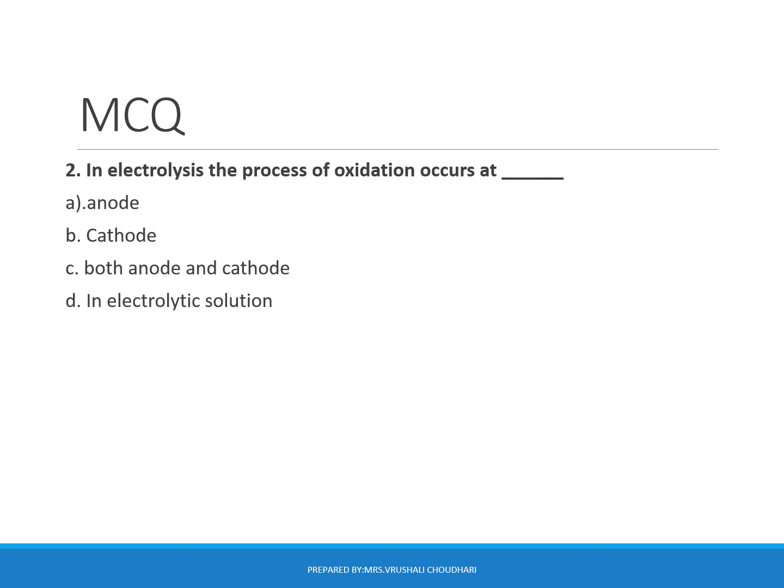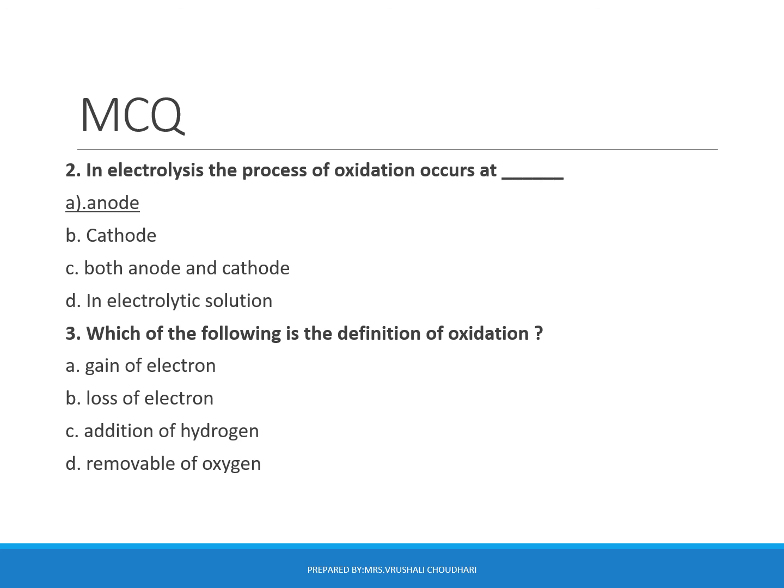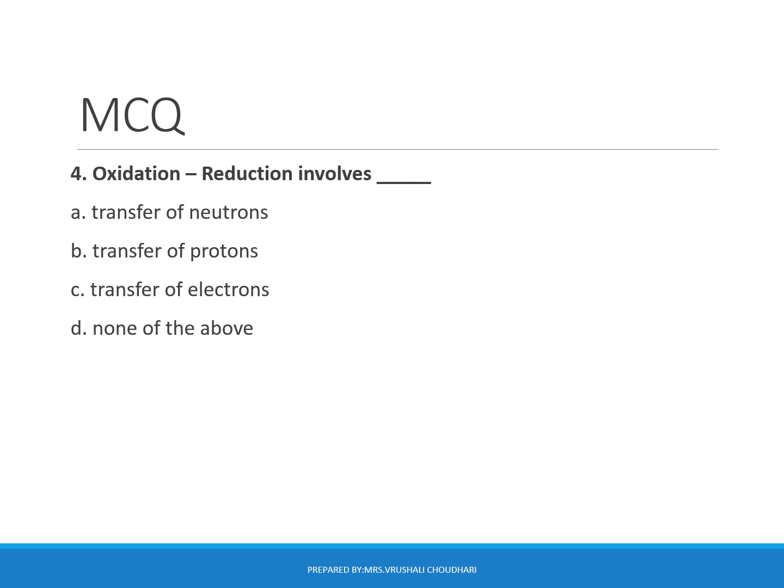In electrolysis, the process of oxidation occurs at the anode. Which of the following is the definition of oxidation? Options: gain of electron, loss of electron, addition of hydrogen, removal of oxygen. The answer is loss of electron — loss of electron is called oxidation. Oxidation and reduction both involve the transfer of electrons.